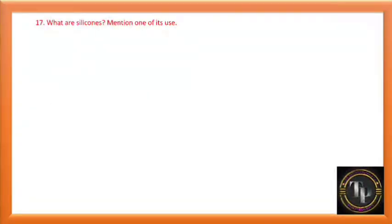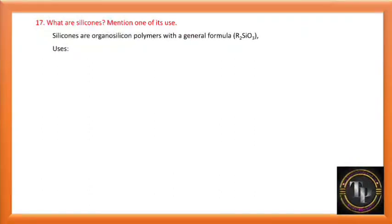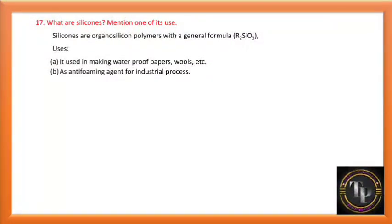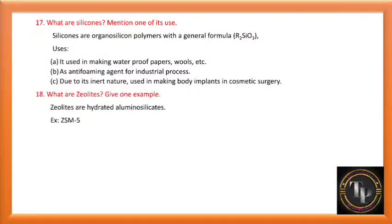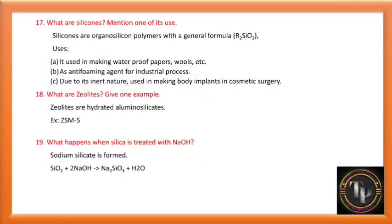Uses of boron: used in making bulletproof vests, used as control rods in nuclear reactors, and in manufacture of heat-resistant glasses. What are silicones? Silicones are organosilicon polymers with general formula R2SiO3. They are used in making waterproof papers and wools, as anti-foaming agents in industrial processes, and in making body implants in cosmetic surgery. What are zeolites? Zeolites are hydrated aluminium silicates; an example is ZSM-5.